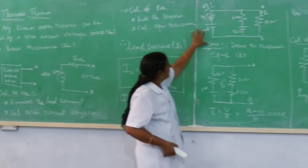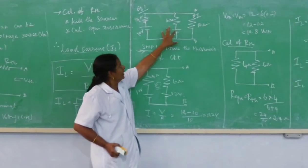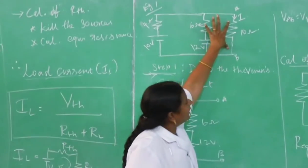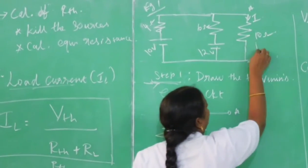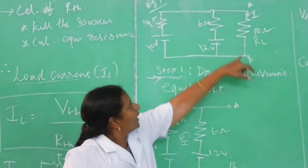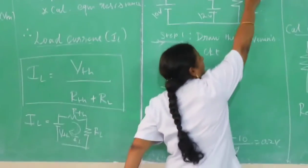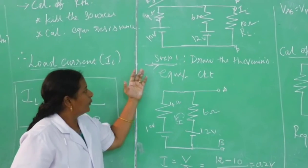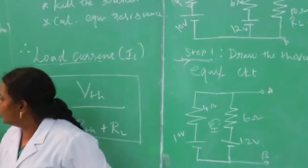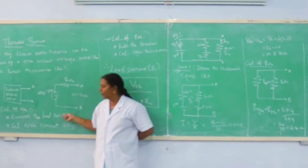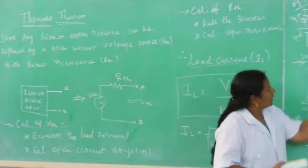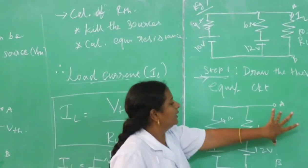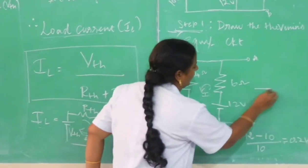For an example, consider a two-loop circuit. I am going to calculate the current across the 10 Ohm resistance. I am considering this 10 Ohm resistance as load resistance, that is RL. I am going to calculate the load current using Thevenin's theorem. Step one: we have to calculate the open circuit voltage V Thevenin. For this, we have to remove the load terminal — our load terminal is this 10 Ohm resistance. Then calculate V TH.